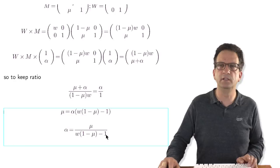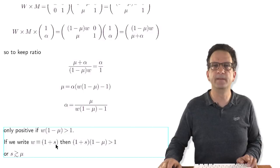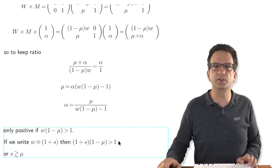Writing W as 1 plus s, where s is the growth rate beyond 1, we need (1+s)×(1−mu) > 1. For small s and small mu, this means s must be approximately greater than mu. So the error threshold happens when the growth rate advantage s exceeds the mutation rate mu.